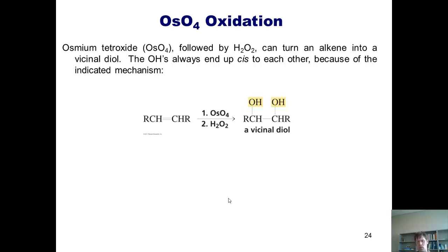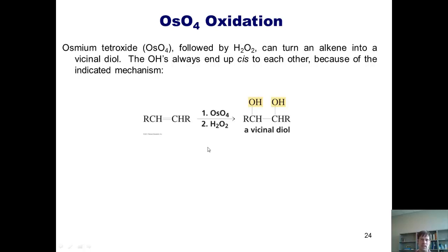We now arrive at this one. Dihydroxylation of alkenes using osmium tetraoxide. See, if you have an alkene like this, and you treat it with osmium tetraoxide, followed by a peroxide quench, you get this type of diol. This diol is called a 1,2-diol, or a vicinal diol. It's important to note that the diol product that you get always ends up having the two oxygens being added syn or cis to each other.